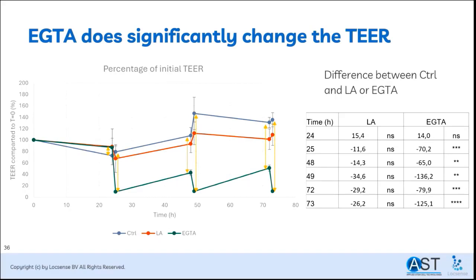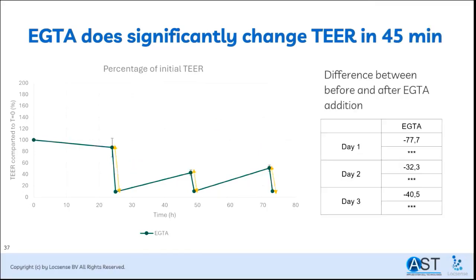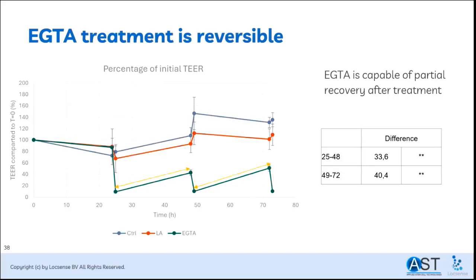EGTA, on the other hand, does significantly change the barrier function. Not only is the difference between control and EGTA significant, the relative TEER is close to zero — the barrier function is completely gone. To emphasize that this difference is indeed caused by the addition of EGTA, we compared the before and after measurement results, showing EGTA causes a significant decline in barrier function, always to about 10% of the initial value. Tight junctions and adherens junctions are responsible for 90% of the total TEER value. Since EGTA only chelates the calcium ions, we wanted to see if removing EGTA could restore the barrier function — while the recovery is not up to 100%, we do see significant improvement, illustrating that EGTA treatment is reversible.